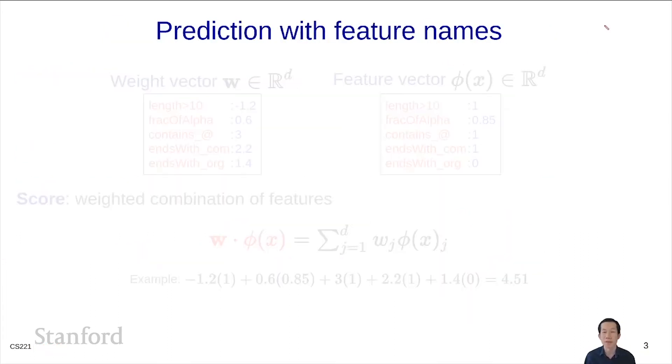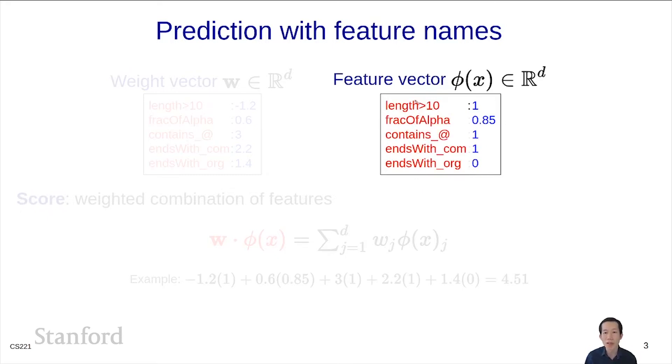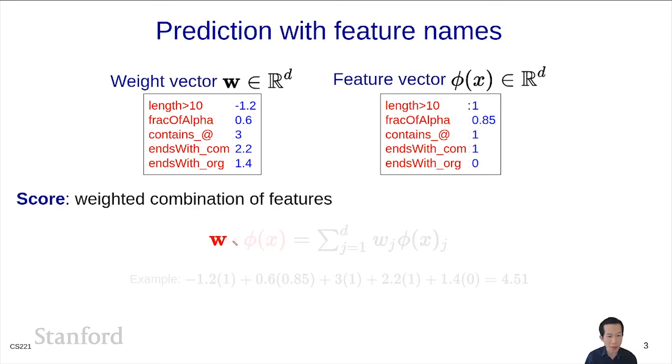Now we go to prediction. Remember that we've previously defined a feature vector to just be a real vector, a list of numbers. What we've done right now is annotate each component of that feature vector with a name that describes what that component is about. We can do the same thing with the corresponding weight vector. Here is a weight vector, just a list of numbers, and we can annotate each component with the name of the corresponding feature. Recall that the score is just the dot product, w dot phi of x. Just to write out the dot product, it's a sum over all the features of wj, the weight of that feature, times the feature value.